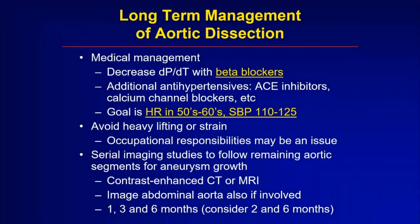For the long term, patients who have had an aortic dissection require very careful management. We use drugs called beta blockers, which reduce the heart rate and force of the heartbeat — we think this reduces the chance that the aorta will enlarge or tear again. We want blood pressure to be well-controlled both acutely and chronically, and we use medications of various types to keep it down.